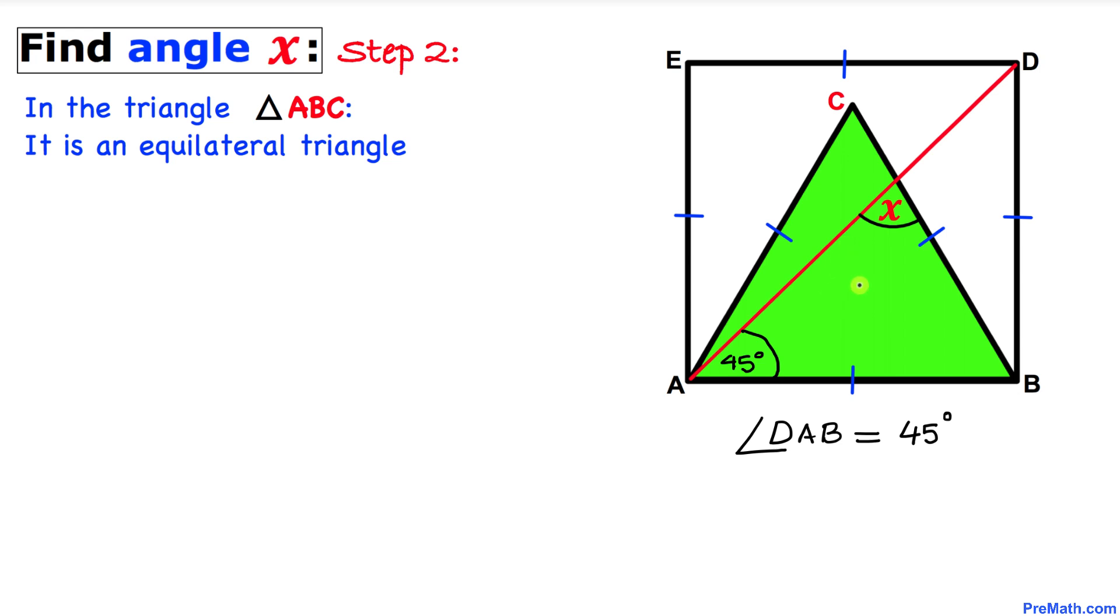Here's our next step. Let's focus on this triangle ABC, the green one, and we know that this is an equilateral triangle. Therefore, all of its angles have got to be 60 degrees each. So therefore our angle CAB is going to be 60 degrees.